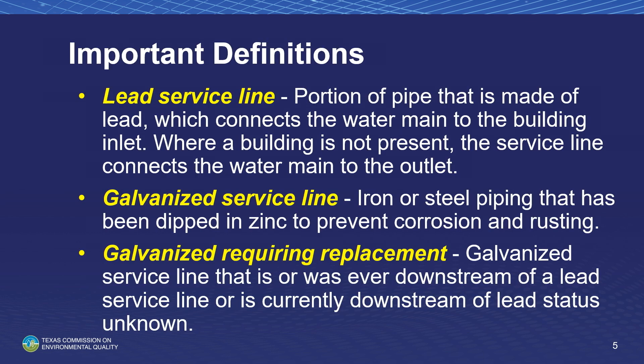Before we dive in, let's go over some definitions. A lead service line means a portion of pipe made of lead which connects the water main to the building inlet. A lead service line may be owned by the water system, owned by the property owner, or both. Where a building is not present, the service line connects the water main to the drinking water outlet.